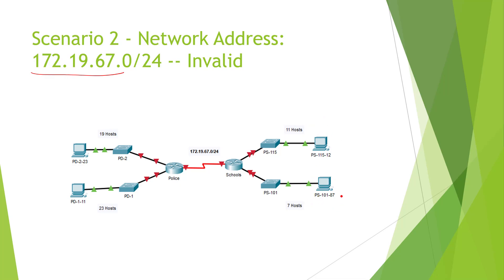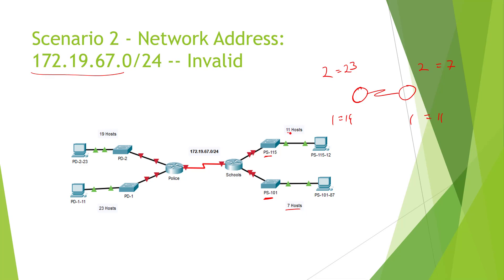Let's look at this one. Number 1 has to equal 19, number 2 has to equal 23. Number 1 has to equal 11 on the right, number 2 has to equal 7. Network 1 on the right-hand side is showing 7 - it needs to equal 11. Otherwise the score sheet will not score it correctly. Network 2 is showing 11. That's not going to provide an accurate result - it won't let you complete it, it won't give you 100%. This is an invalid scenario.